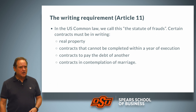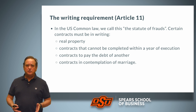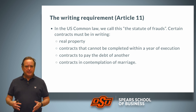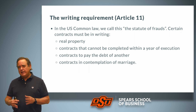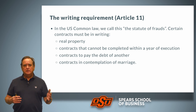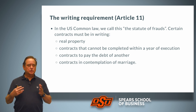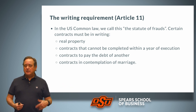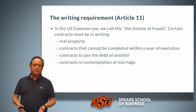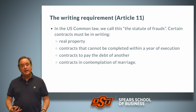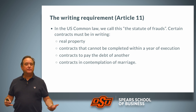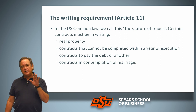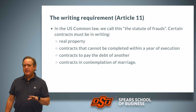Other contracts that must be in writing include: any contract that cannot be completed within a year of its execution; any contract in which one party agrees to pay the debt of another — for instance, co-signing a note or acting as a guarantor; and contracts in contemplation of marriage, specifically prenuptial contracts. So in the common law, these categories of contracts must be in writing to avoid the possibility of fraud.